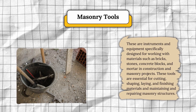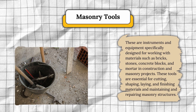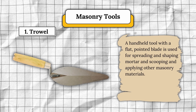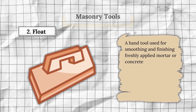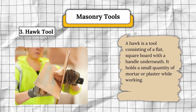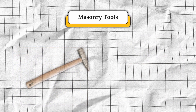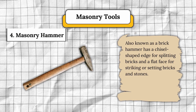The second classification is masonry tools. These are instruments and equipment specifically designed for working with materials such as bricks, stones, concrete blocks, and mortar in construction projects. Number one, trowel — a handheld tool with a flat pointed blade used for spreading and shaping mortar. Number two, float — a hand tool used for smoothing and finishing freshly applied mortar or concrete. Number three, hawk tool — a flat square board with a handle underneath that holds mortar or plaster while working. Number four, masonry hammer — also known as a brick hammer, with a chisel-shaped edge for splitting bricks and a flat face for striking or setting bricks and stones.